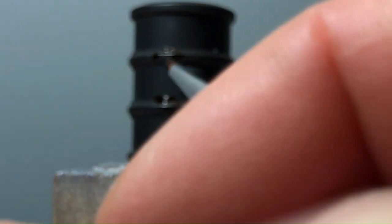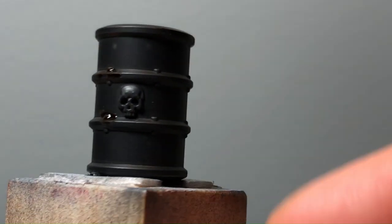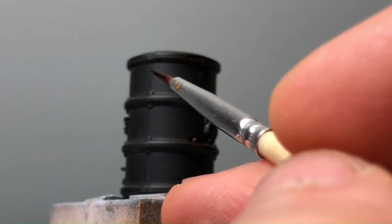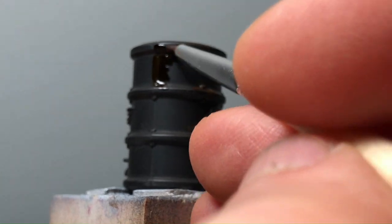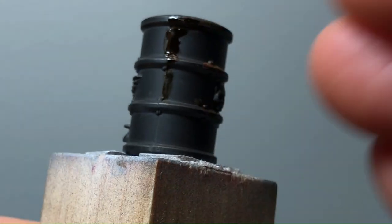I've got some Dirty Down Rust, and all I've used it for previously is to effectively dab on some spots on rocks on bases to make it look like iron oxide. But it's time to try and actually use it to its design intent, which is to create the appearance of rust.